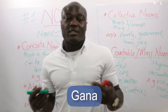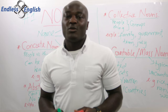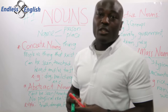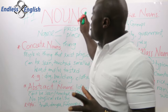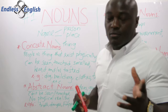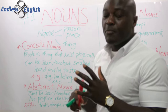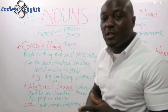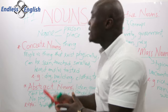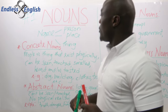Hello guys, as always it's Ghana from Endless English, and today we'll be talking about nouns. A noun is a part of speech, so today we'll discuss how you can recognize nouns, what the different kinds of nouns are, and so forth. So let's get to it at once. A noun is a name of a person, place, or thing — a word that names a person, a place, or a thing is what we refer to as a noun. There are four types of nouns we'll look at here.